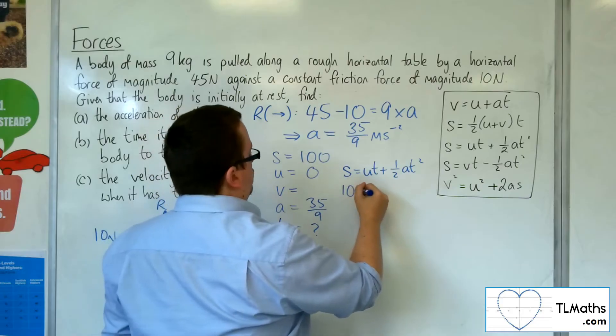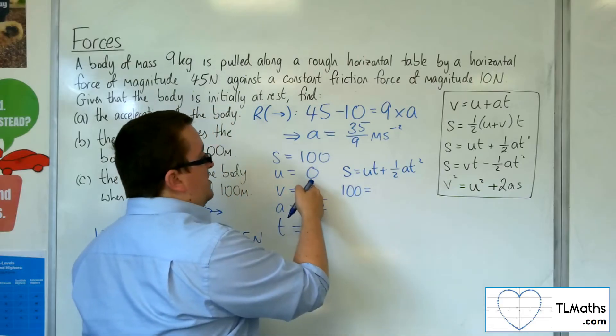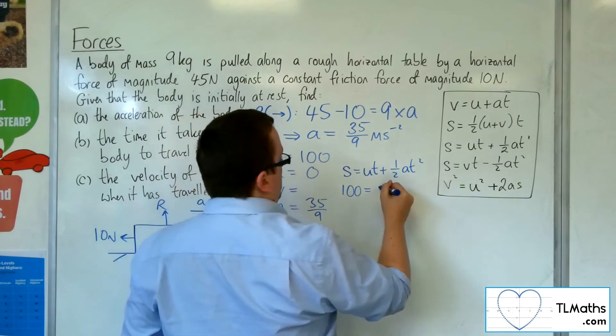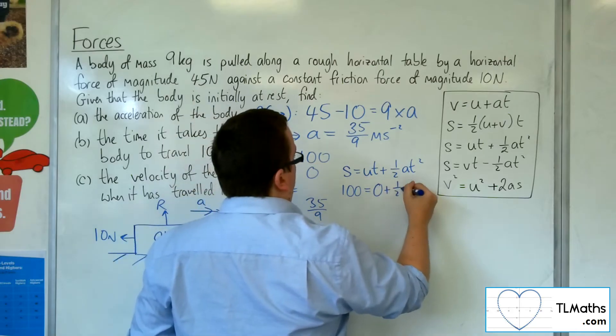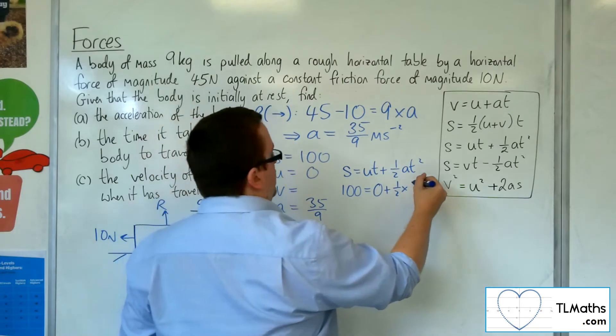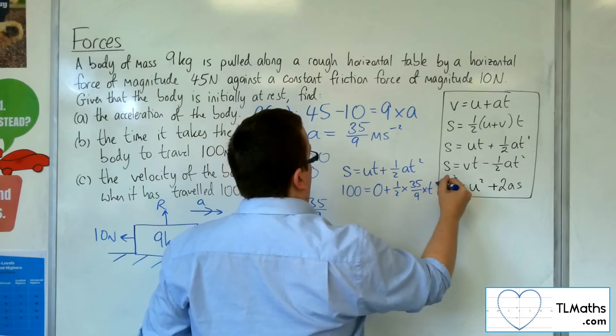So 100 is equal to UT, so 0 times T, so 0, plus 1 half times A, 35 ninths, times T squared.